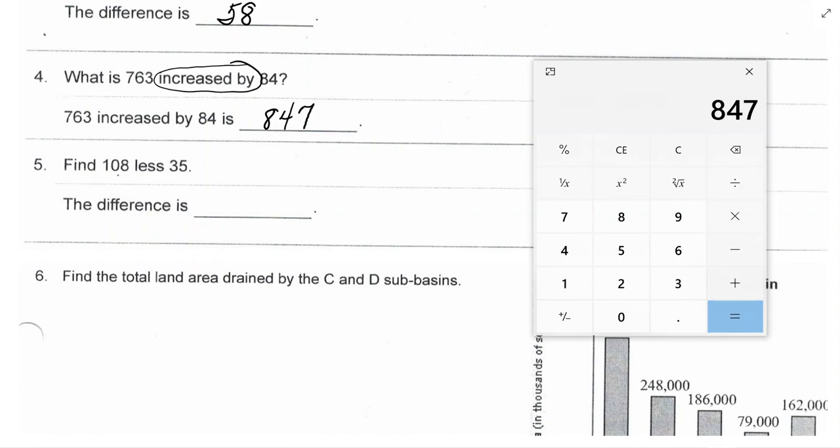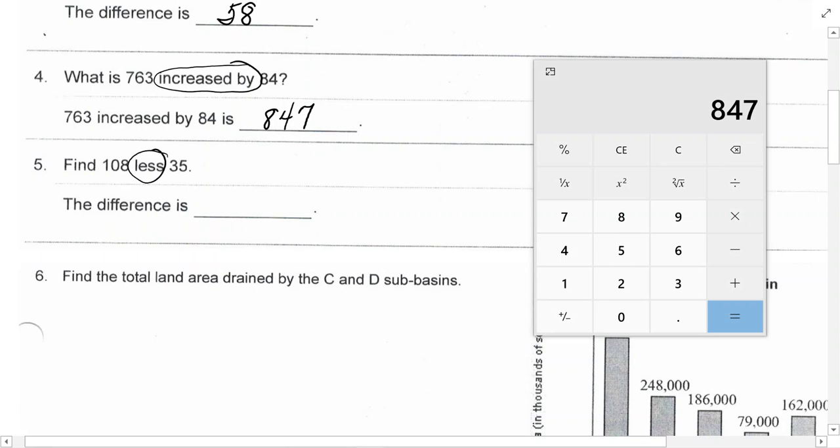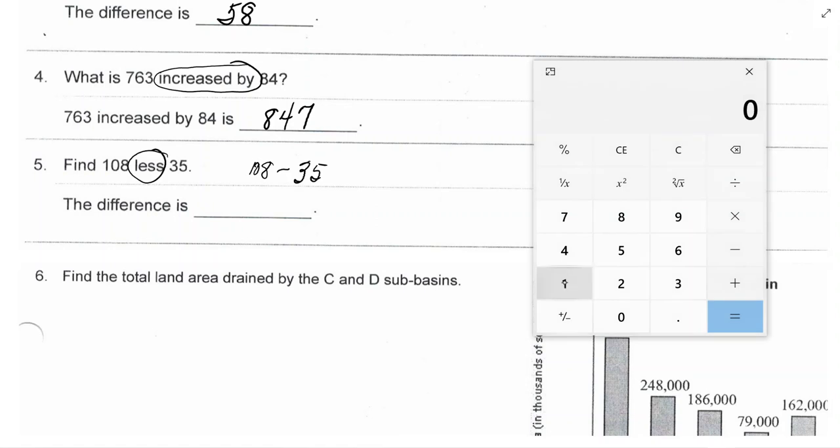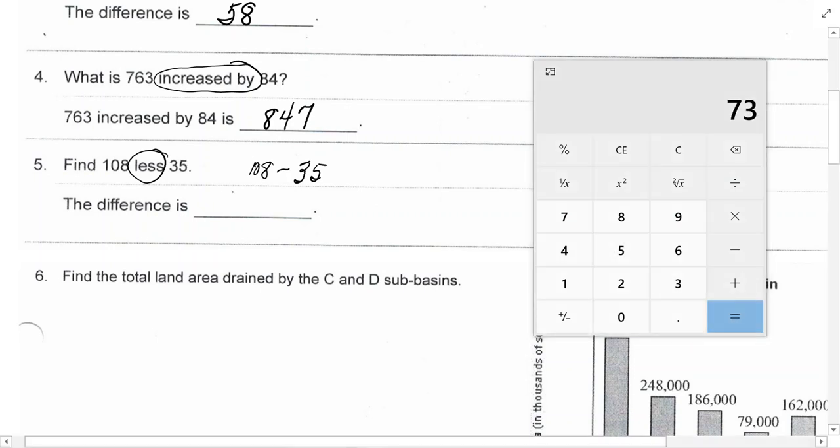The next one, it says, find 108 less 35. Less is another way to indicate subtraction. So, it is 108 subtract 35. So, here we go. Clear. 108, 108 subtract 35. I get 73.